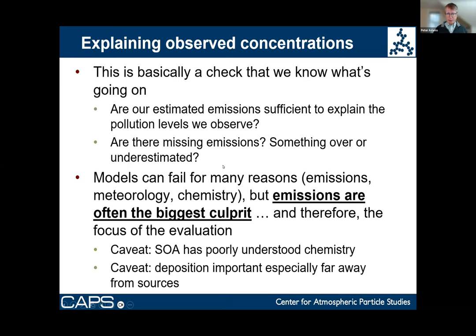The second major reason for doing air quality modeling is that the model lets you do what-if scenarios. You can imagine different worlds where emissions are either higher or lower, see what the concentrations would be, and see what the health impacts would be. The two kinds of what-if scenarios are: some sort of policy implementation that reduces emissions, and then seeing how concentrations change and what the health benefits are. More specifically, models get used in evaluating or permitting a new source — maybe an industrial facility — so people can understand how the neighborhoods around it are being impacted.